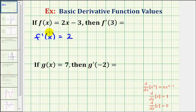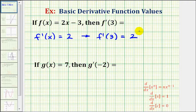Notice how this derivative function value is not affected by x, therefore f prime of 3 is going to be equal to positive 2. The value of the derivative function at a given value of x gives us the slope of the tangent line at that location.